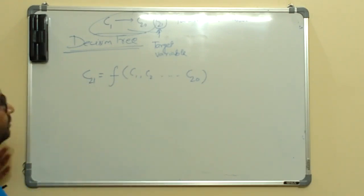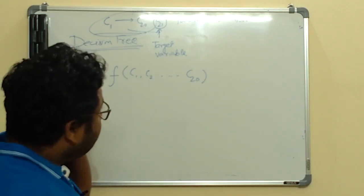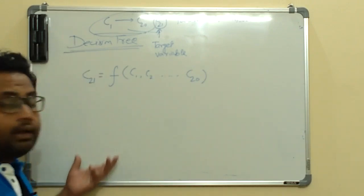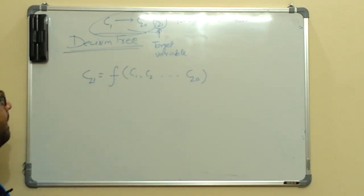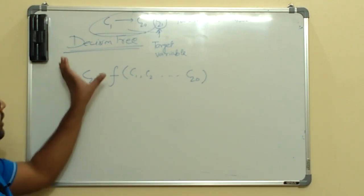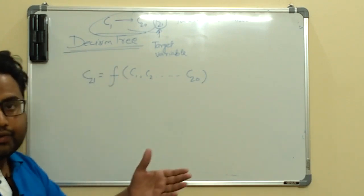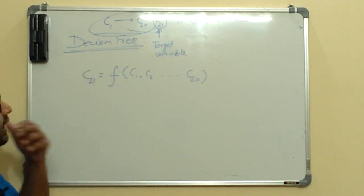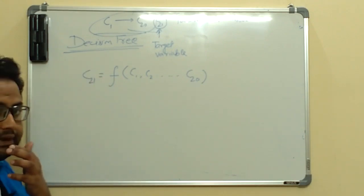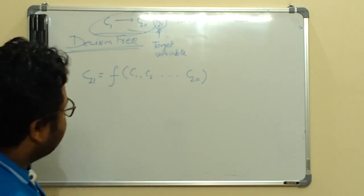We could have used logistic regression here as well, but we are talking about why we use random forest instead of a single decision tree — what is the need for random forest?